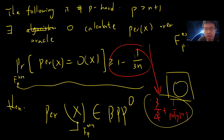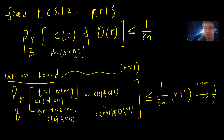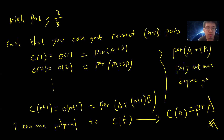The proof basically works by uniformly choosing matrices, shifting them, and computing t equals 1 to 3n plus 1. You prove that the shifted matrix is still uniform, use this algorithm, run the union bound, and prove that for a uniformly random chosen B, the failure rate is 1 divided by 3, so the success rate is 2 thirds. Then you use polynomial interpolation to recover the permanent.